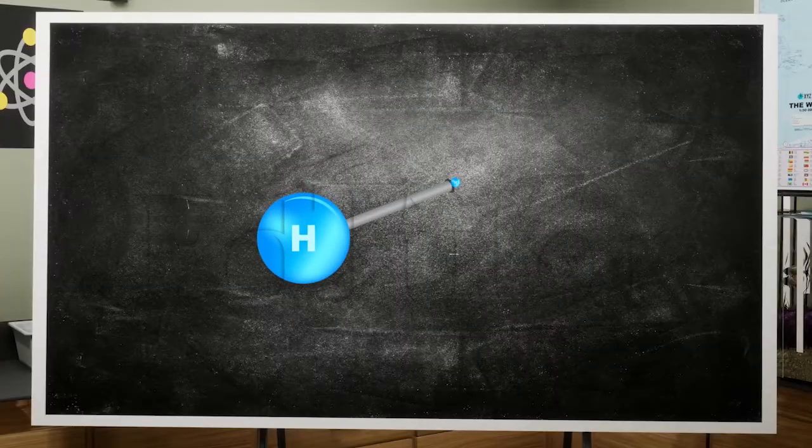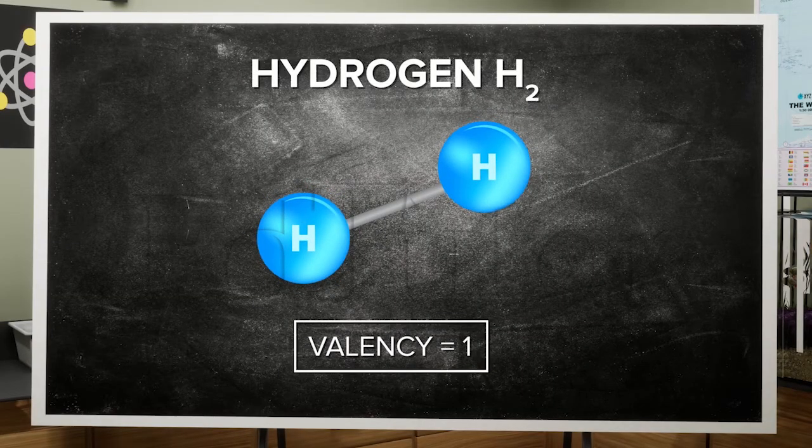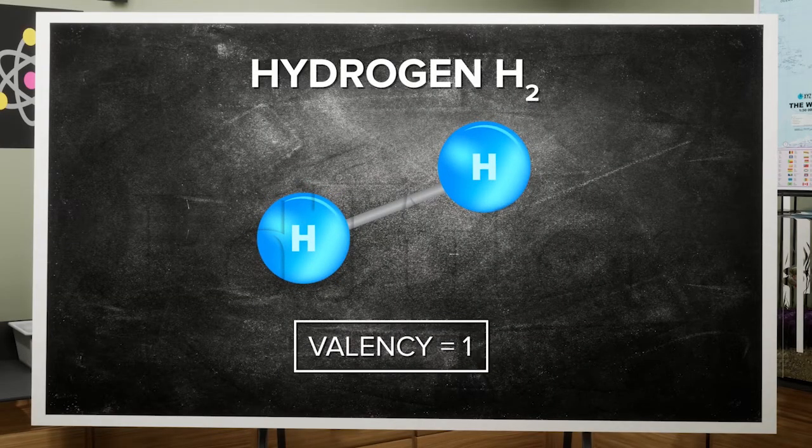To sum it up, the valency of hydrogen is 1 because one atom of hydrogen can form one bond only.